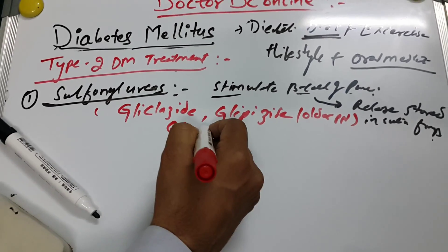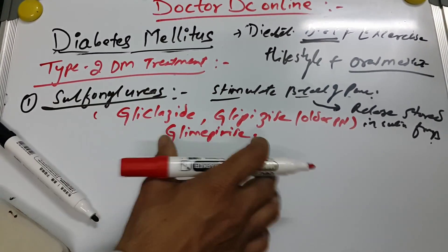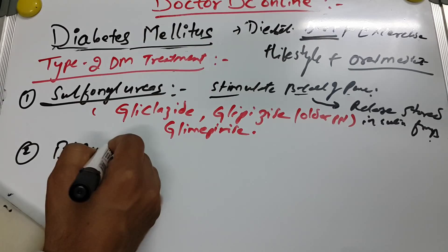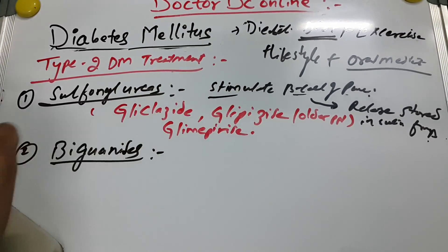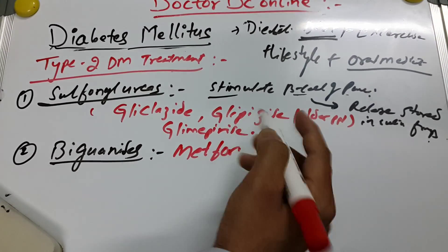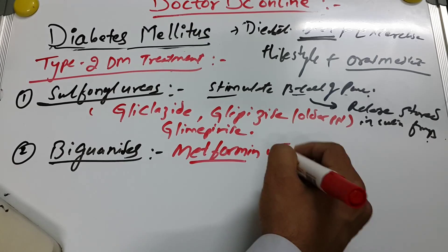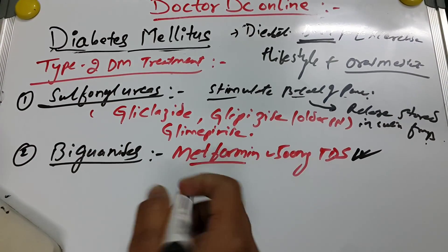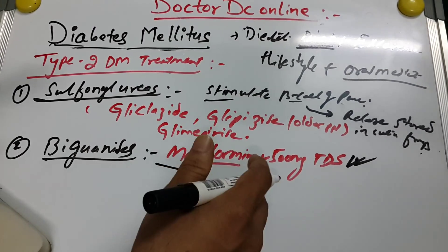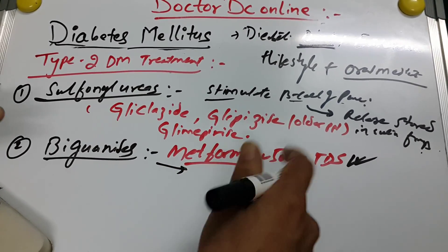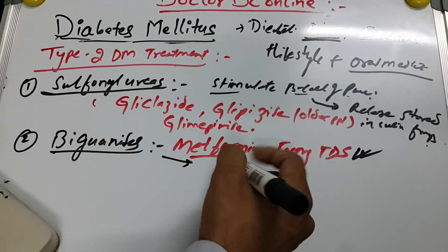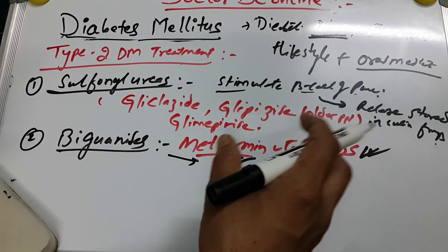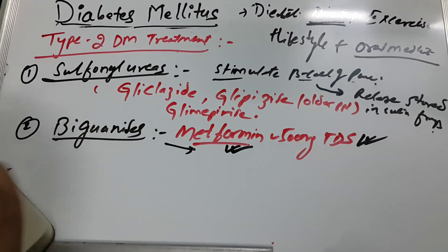The second and most important group is biguanides. The most commonly used drug is metformin 500 mg TDS. Its mechanism of action involves peripheral utilization of glucose and inhibition of hepatic gluconeogenesis. This is the most common and useful drug.